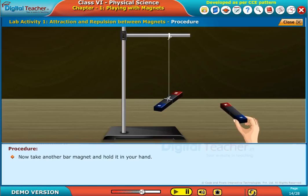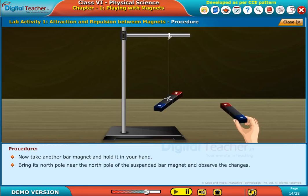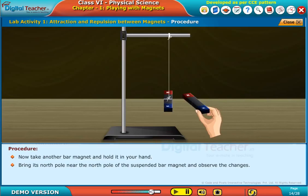Now take another bar magnet and hold it in your hand. Bring its north pole near the north pole of the suspended bar magnet and observe the changes.